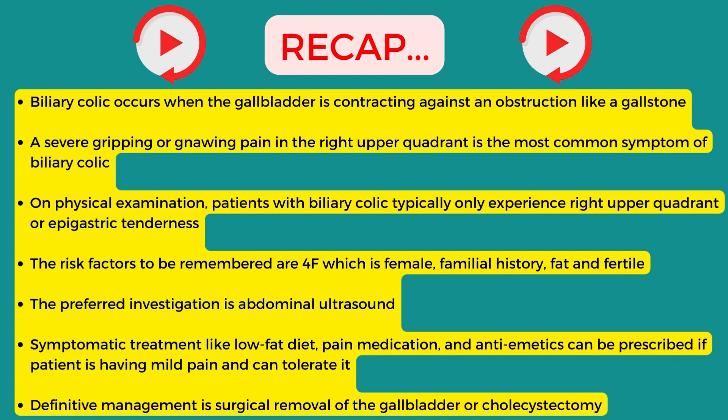The preferred investigation is abdominal ultrasound. Symptomatic treatment — including low-fat diet, pain medication, and anti-emetics — can be prescribed if the patient has mild pain and can tolerate it. Definitive management is surgical removal of the gallbladder, or cholecystectomy.